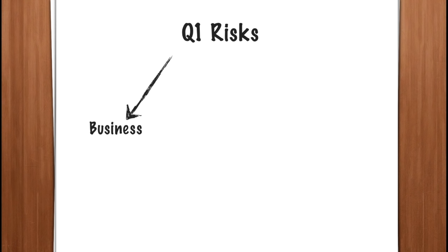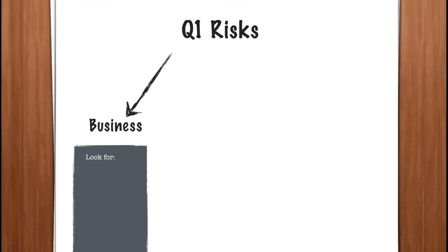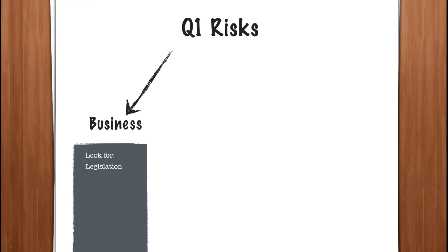The first type you might be asked to identify is business risk. For this, it is simply any risk that could damage the client's business. The standard itself separates them out into internal and external factors. The sorts of things to look for in the scenario — if you're asked to identify business risks — you need to look for changes in legislation, which could damage the client's business because it could mean they can no longer do things the way they currently do them, or maybe not at all.